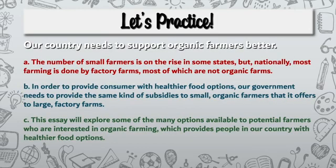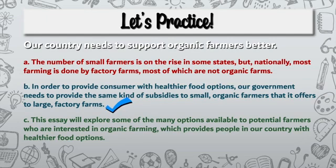Let's try another one. The prompt is: our country needs to support organic farmers better. Pause the video and choose among A, B, or C. The answer is B: in order to provide consumers with healthier food options, our government needs to provide the same kind of subsidies to small organic farmers that it offers to large factory farms.